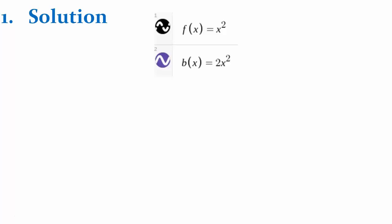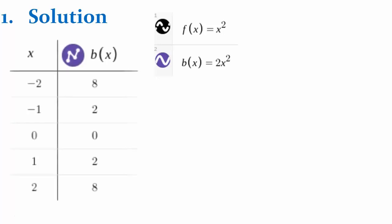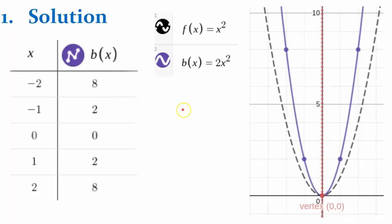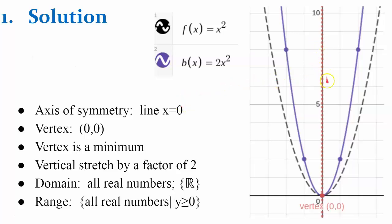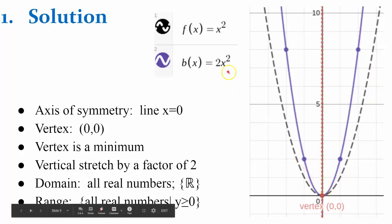The solution for number one, graphing the function b equals 2x squared. I use the same five inputs. Here's our graph. And here's our description. Our axis of symmetry is the line x equals 0. Our vertex is 0, 0, which is a minimum. It's a vertical stretch by a factor of 2. Our domain is all real numbers. And our range is all real numbers y greater than or equal to 0.